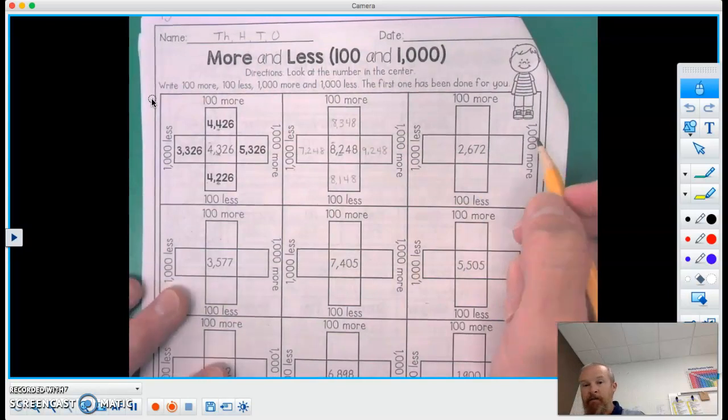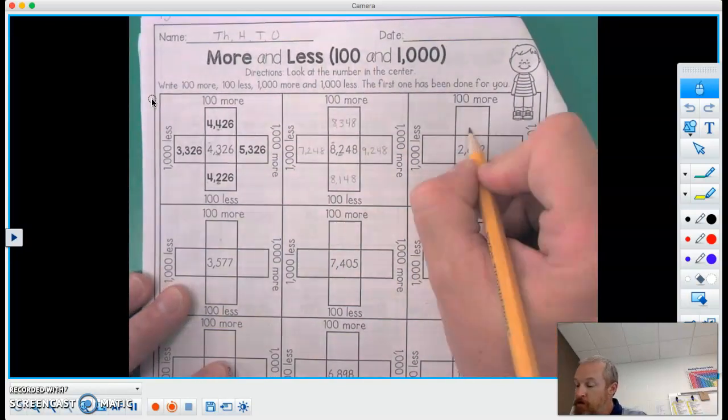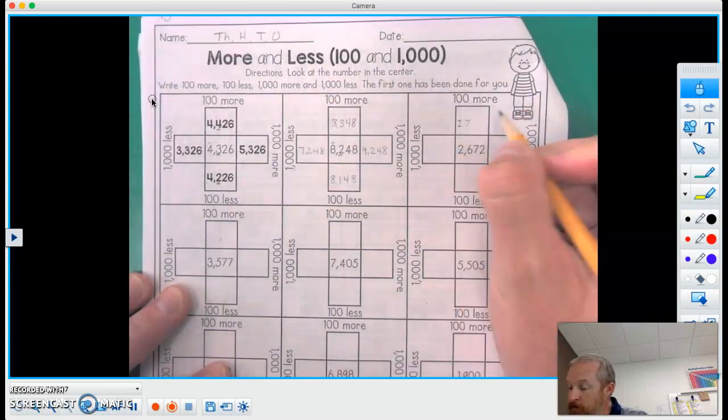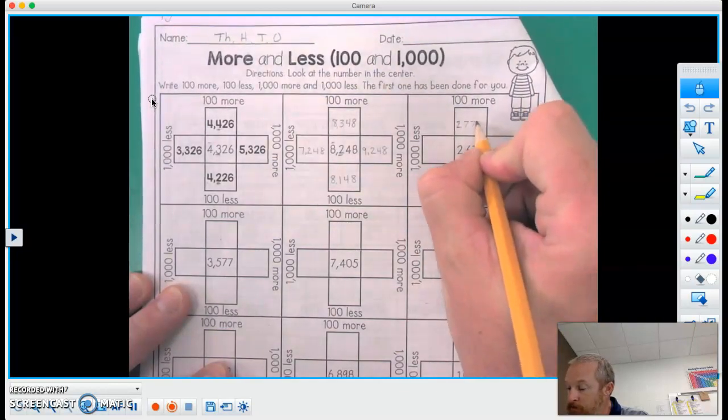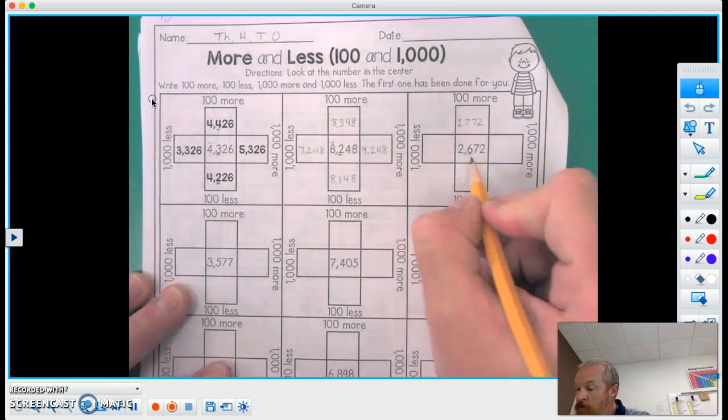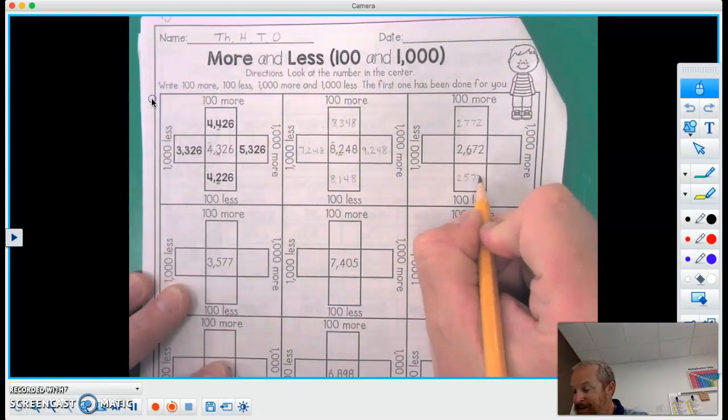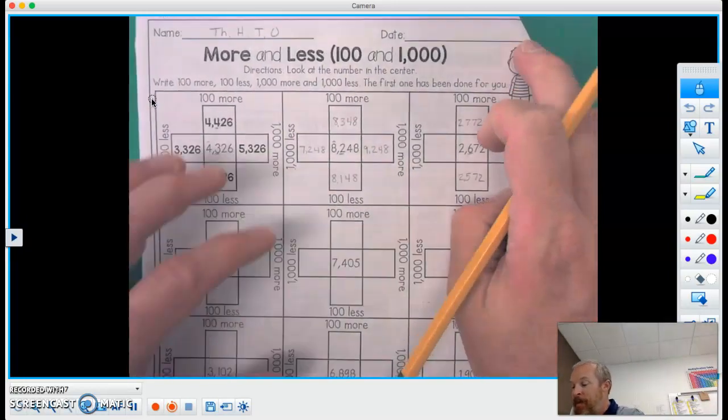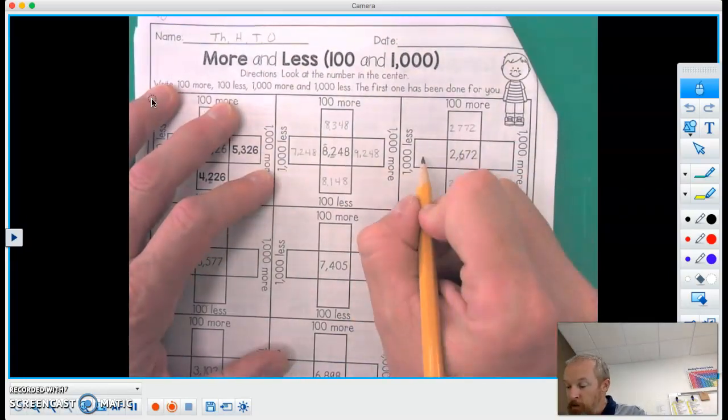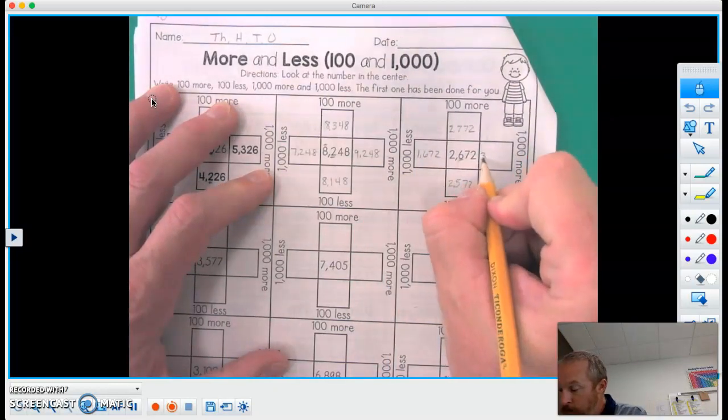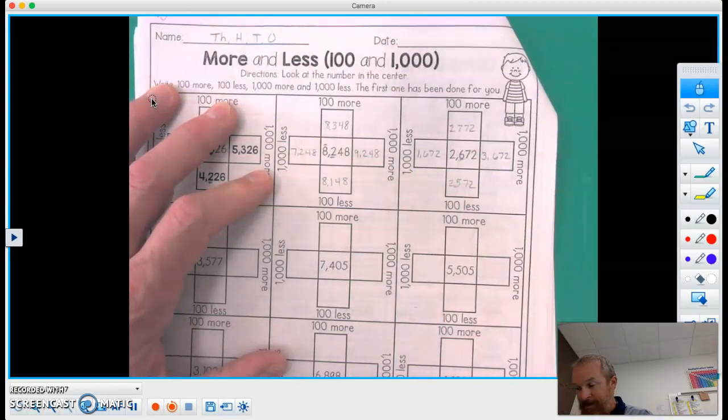Okay, let's do the hundreds column again for this one. So there's 2,772. 2,572. Good job. And 1,000 less would be 1,672. 1,000 more, 3,672.